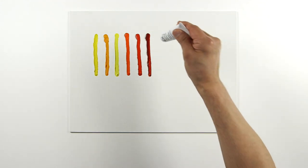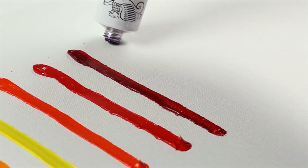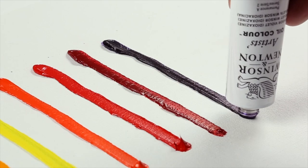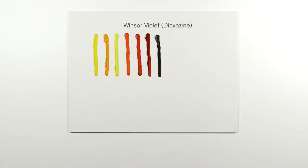Here's an interesting one. Winsor Violet Dioxazine is a vivid mid-shade purple pigment. But when undiluted, it can be used as a deep black. It's a transparent coal tar pigment introduced to the range in the 1960s.